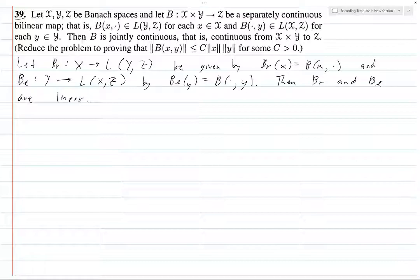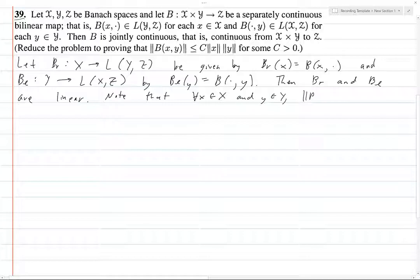So there we go, that's linear. We want to use the uniform boundedness principle. So note that for all x ∈ X and y ∈ Y, the norm of B(x,y) is equal to, just by definition, I'm not going to fit in on this line, it's the norm of, well this is the function B_r(x). B_r gives us a function on Y, and so we evaluate this at y.